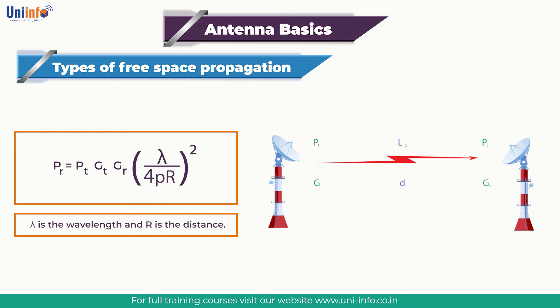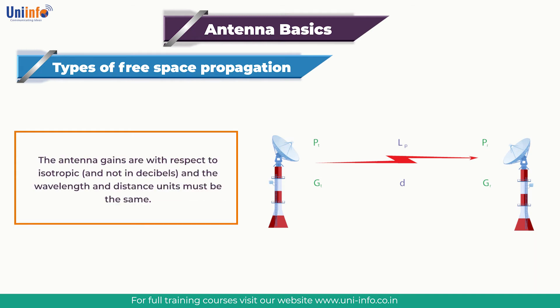The inverse of the factor in parentheses is the so-called free space path loss. The antenna gains are with respect to isotropic and are not in decibels, and the wavelength and distance units must be the same.